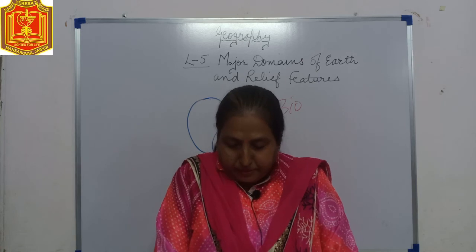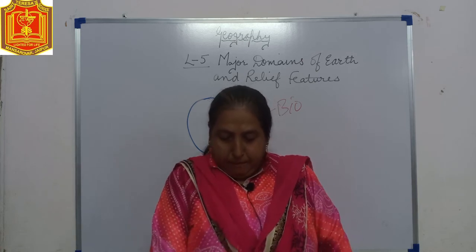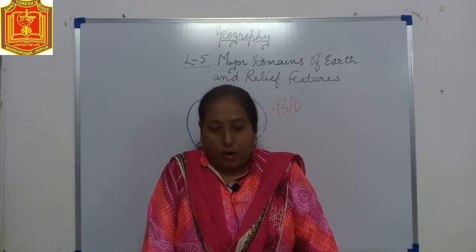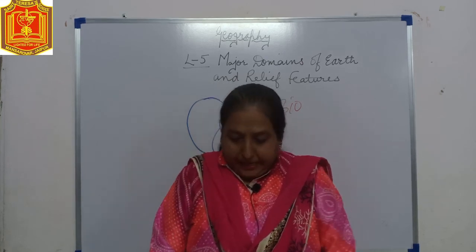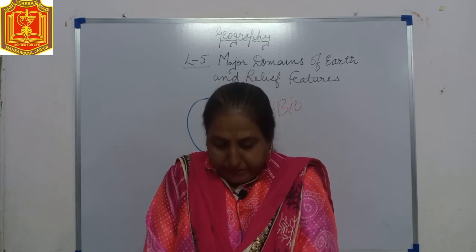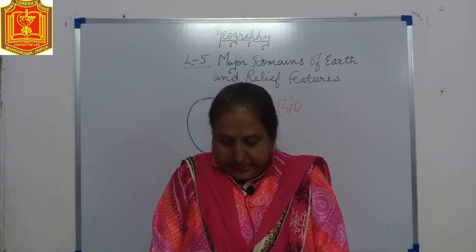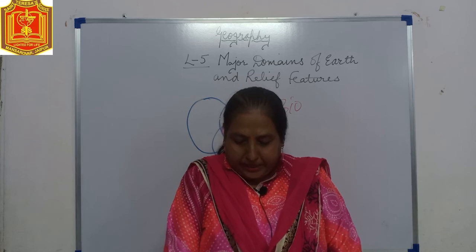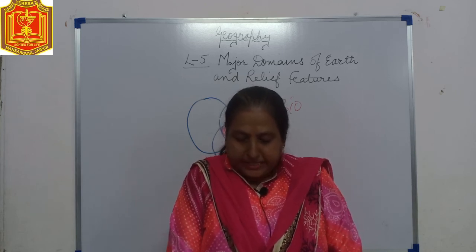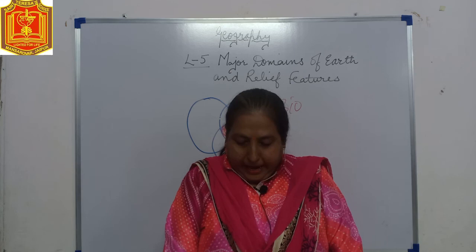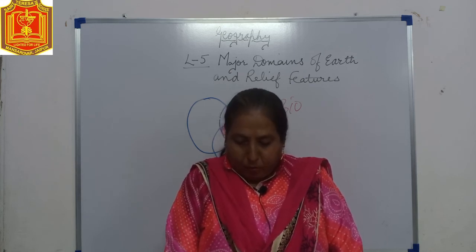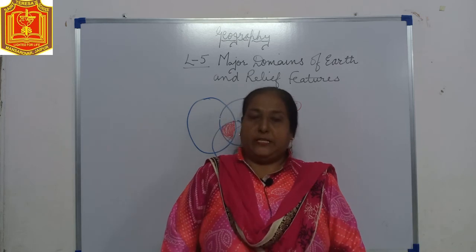There are three types of mountains: fold mountains, block mountains, and volcanic mountains. Fold mountains are created due to internal movements in the earth. As a result of the cooling and contracting of molten magma in the crust, several places become folded. The elevated parts become mountains — that is, fold mountains.